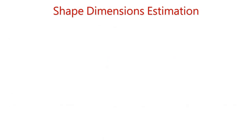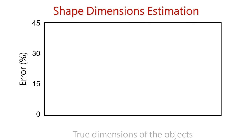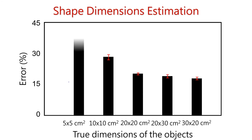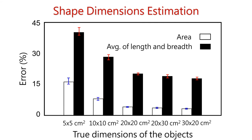To understand the errors in estimating the shape's dimension, we use different object shapes. This plot's x-axis shows different objects with their true dimension, and the y-axis shows the dimension estimation error. These black bars show the average length and breadth error of our dimension estimation. As you can see, for larger objects, the estimation error is smaller. These white bars also show the dimension estimation error for the area of an object. Again, for larger objects, the estimation error is very small, less than 4% only.